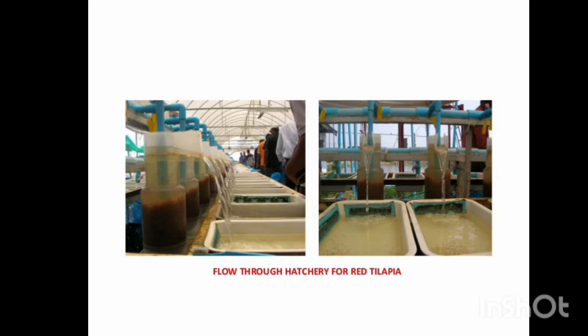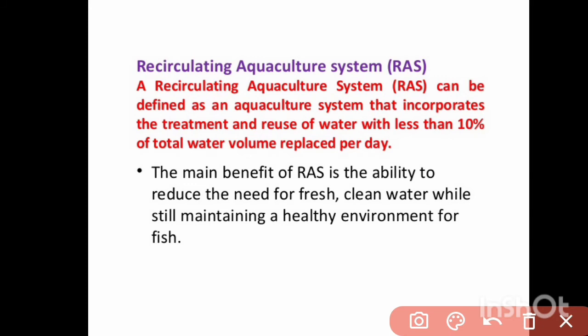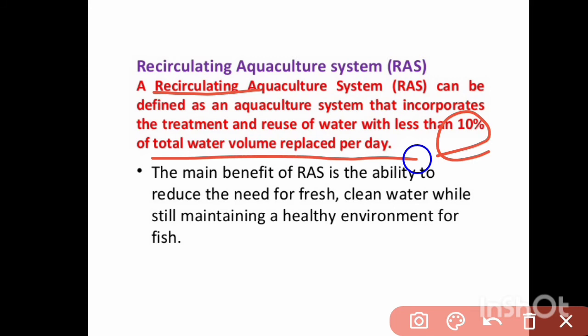Next is the recirculatory aquaculture system (RAS). RAS can be defined as an aquaculture system that incorporates treatment and reuse of water, with less than 10% of total water volume replaced per day. The main benefit of RAS is the ability to reduce the need for fresh and clean water while still maintaining a healthy environment for fish.